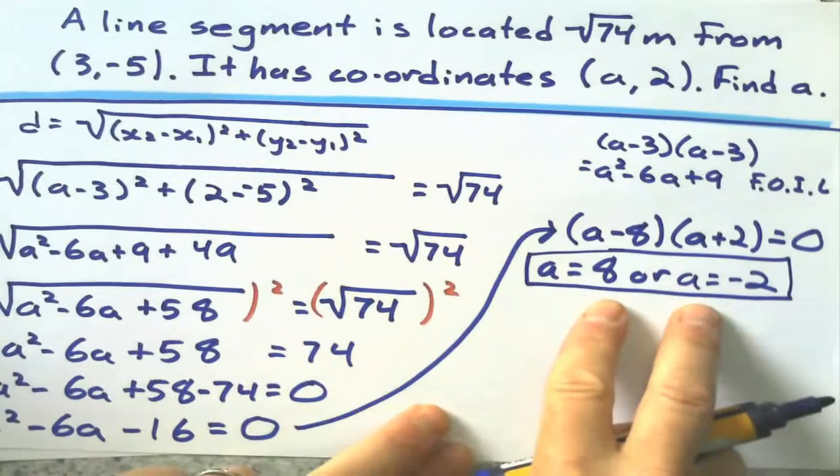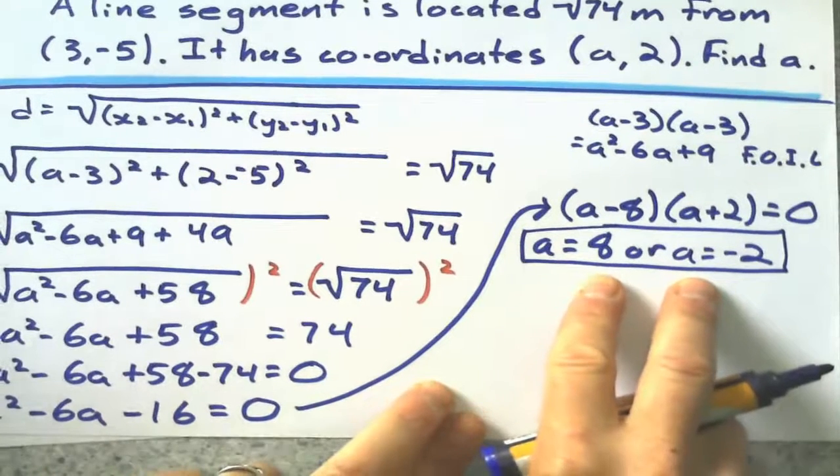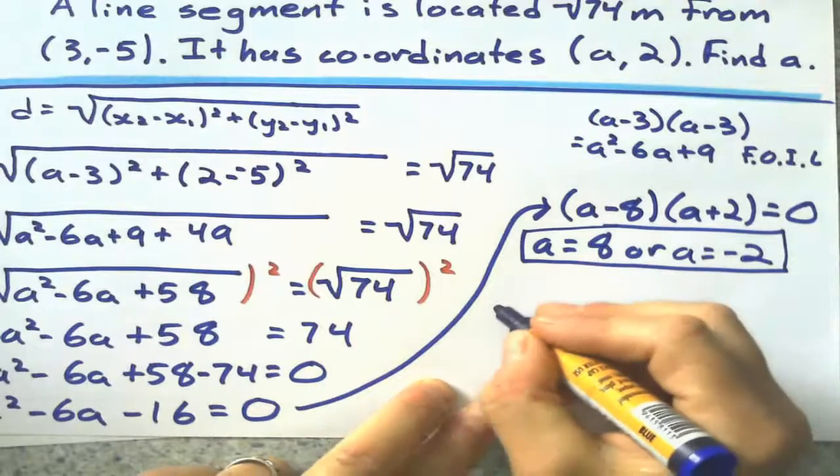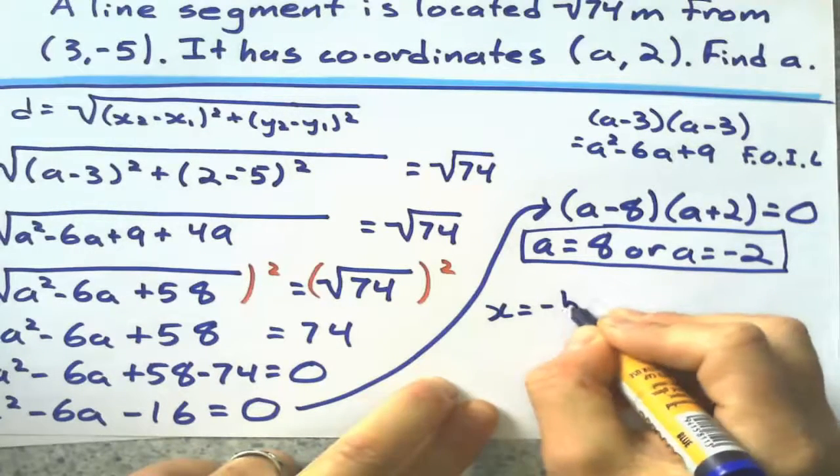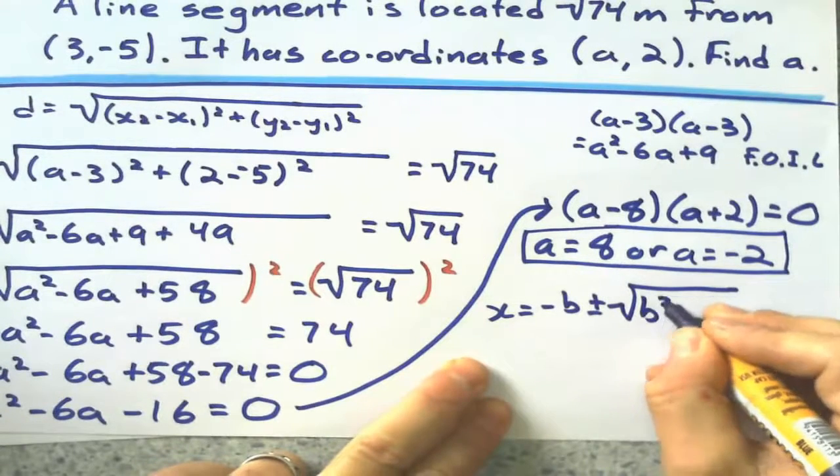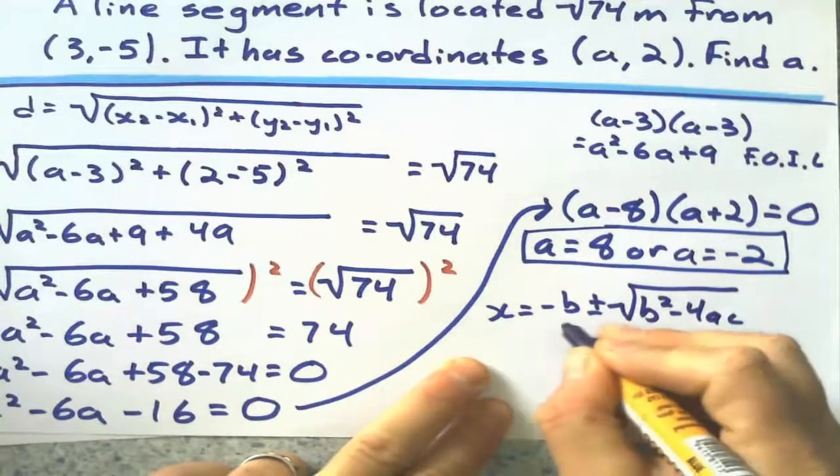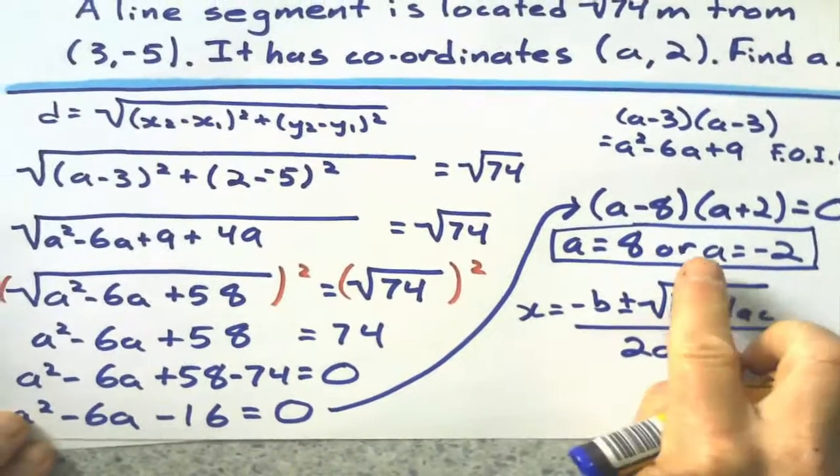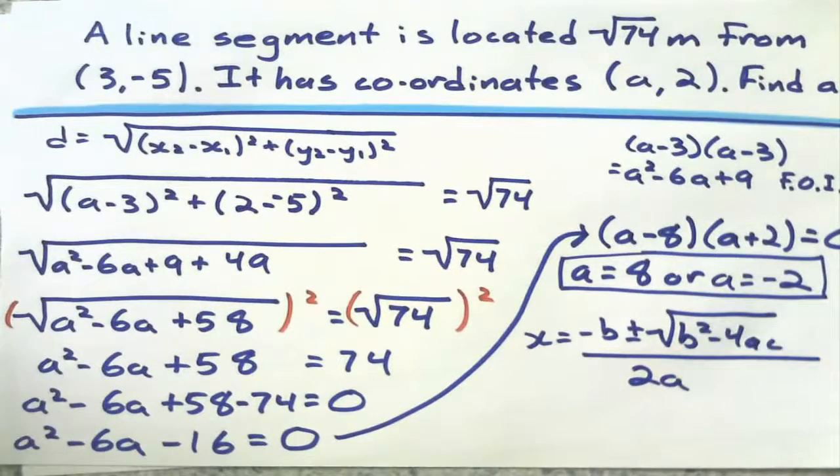Now, of course, if it doesn't factorize, what would we do? We could use quadratic formula. This guy, negative b plus or minus square root b squared minus 4ac over 2a. But, fortunately, this one factorizes and we're all good.